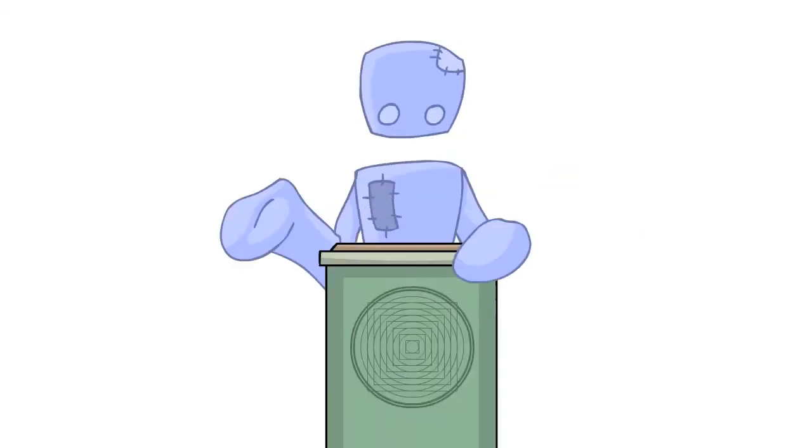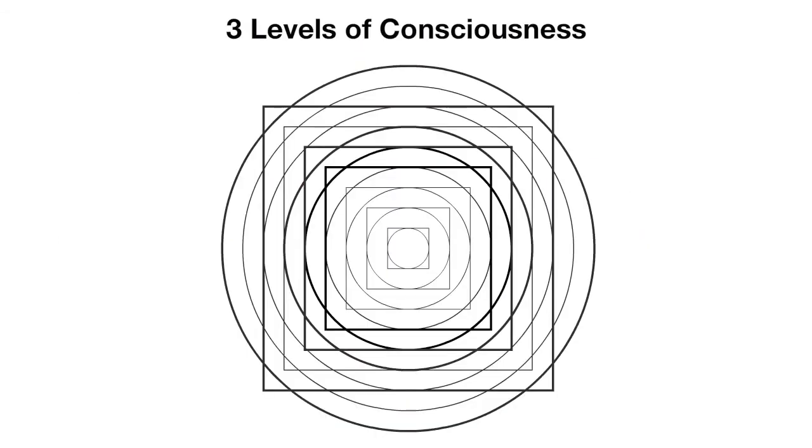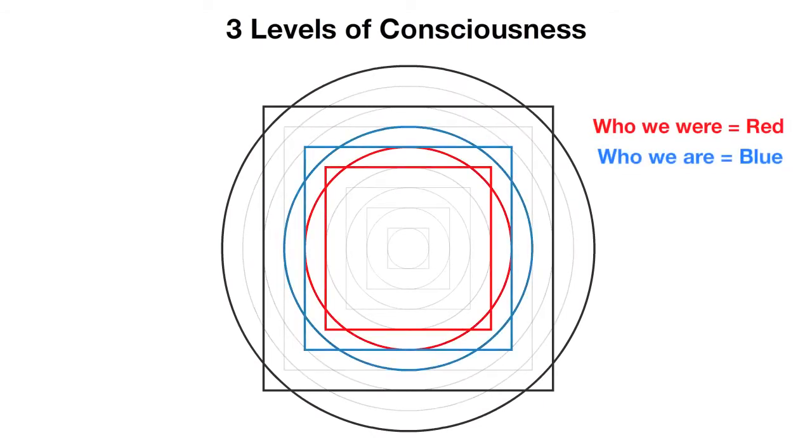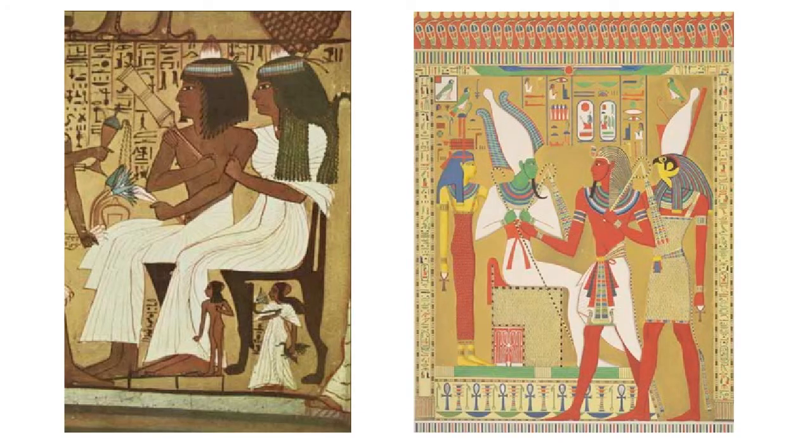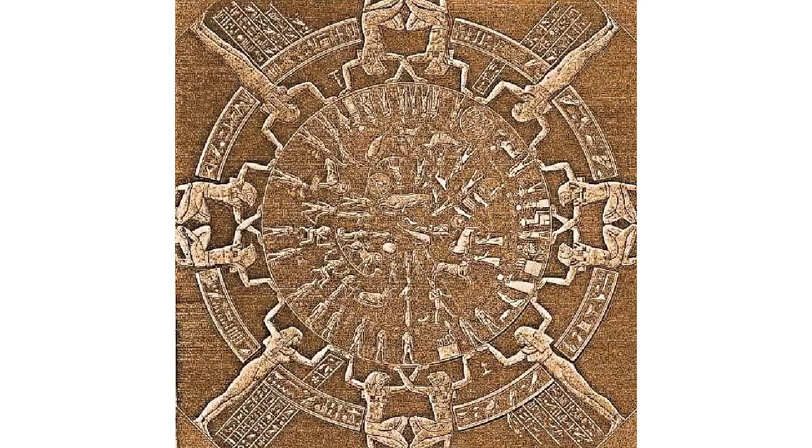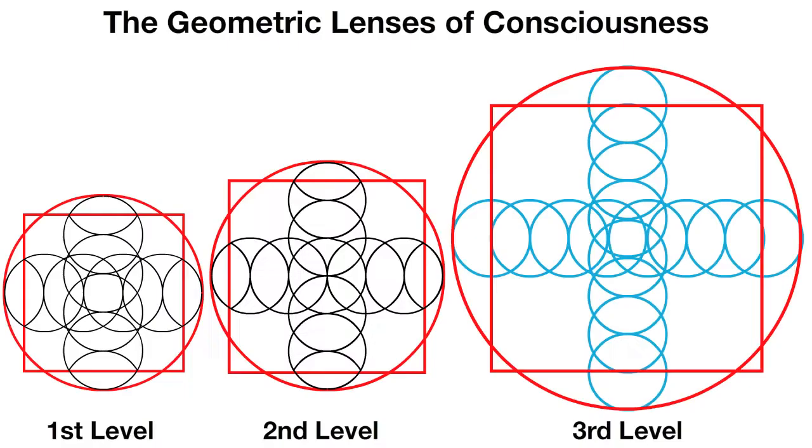Right now, there are three primary levels of consciousness that we are going to be talking about. They are essentially who we were, who we are, and who we will be. We'll call it the first, second, and third, so that it's easy to understand. The ancient Egyptians were very concerned with these three levels as well, and much of their culture was based on this information. Each of these levels has their own geometric lens too, which look like this. We'll come back to these soon.